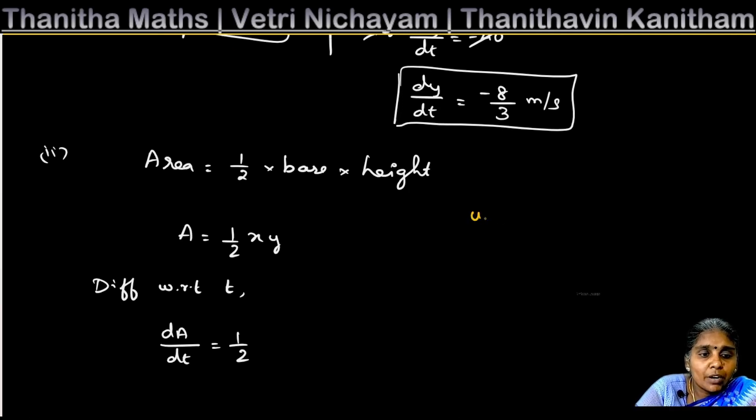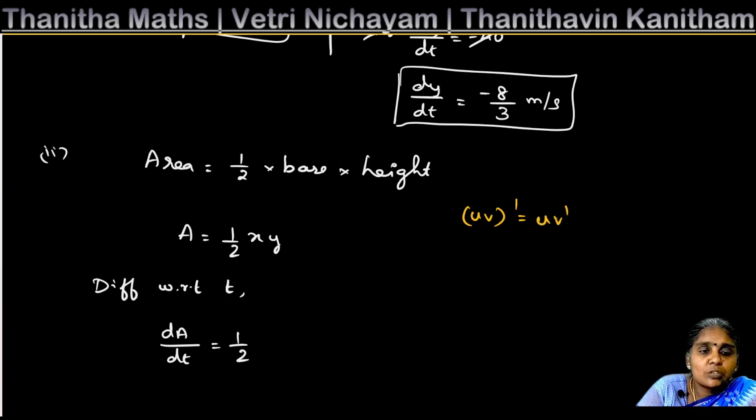To differentiate A = ½xy with respect to time, we use the product rule: d(uv)/dt = u(dv/dt) + v(du/dt). So dA/dt = ½ [y(dx/dt) + x(dy/dt)].